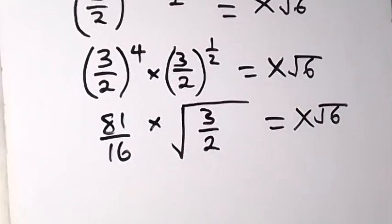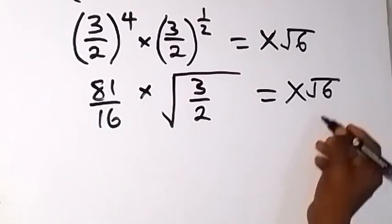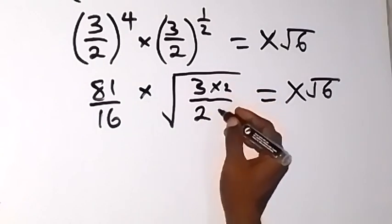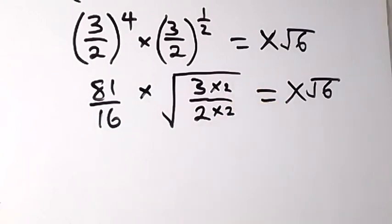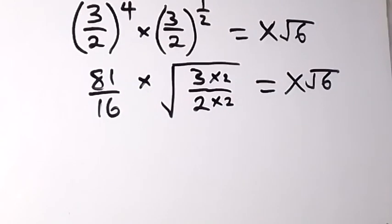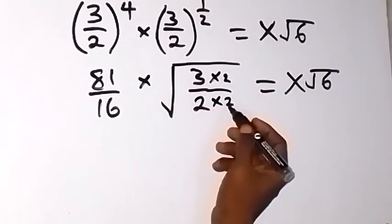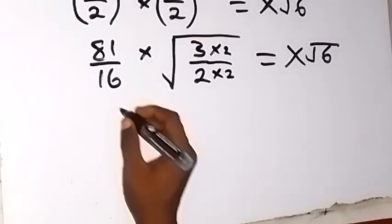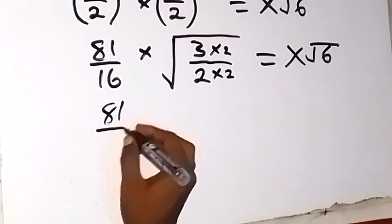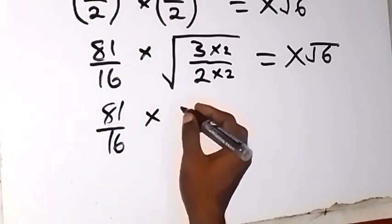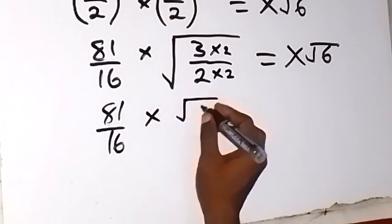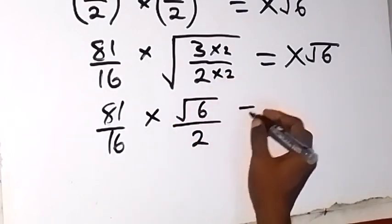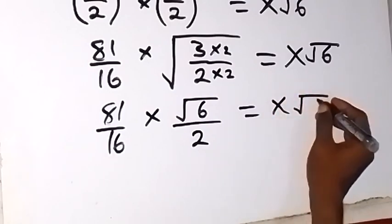Then from there, to have something like root 6 here, we can multiply this by 2 and also multiply this by 2 to balance it. That's the same as equivalent fraction. Then we have root 6 over root 4. So this gives us 81 over 16, multiply by root 6, over root 4. And root 4 is 2. Then equals x root 6.